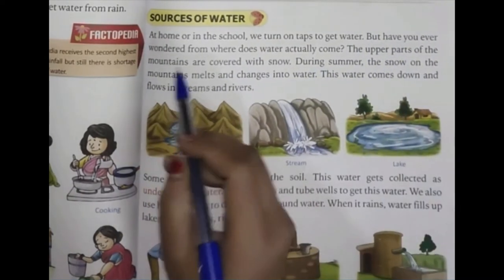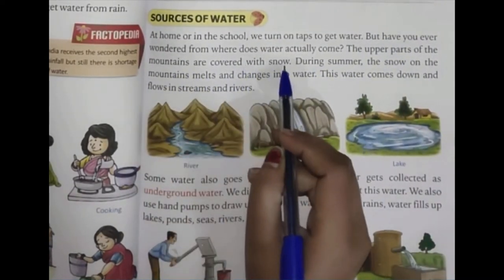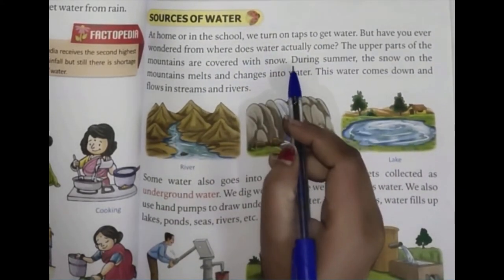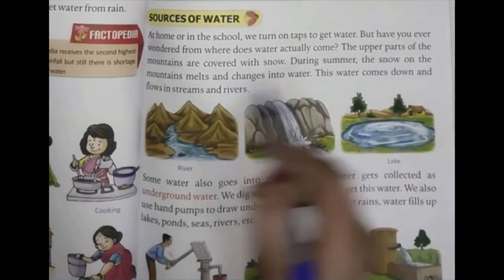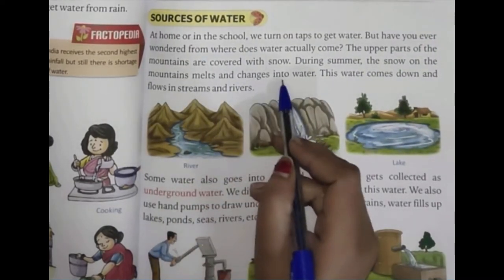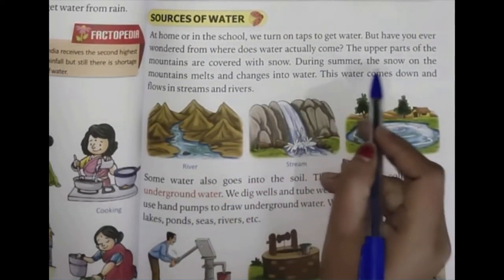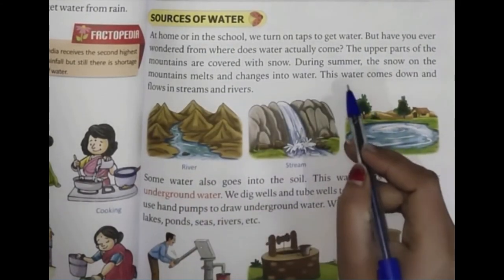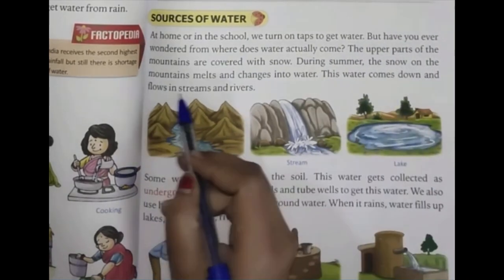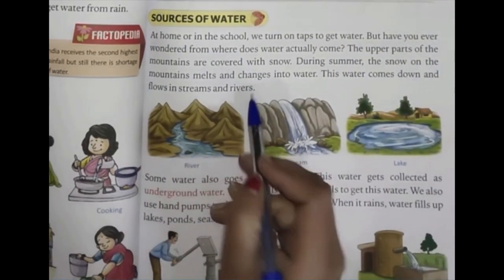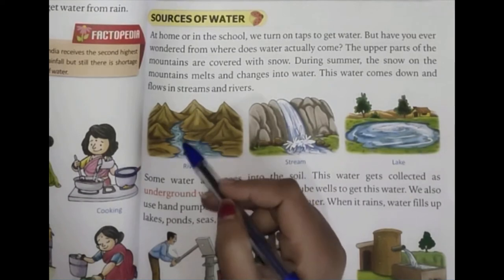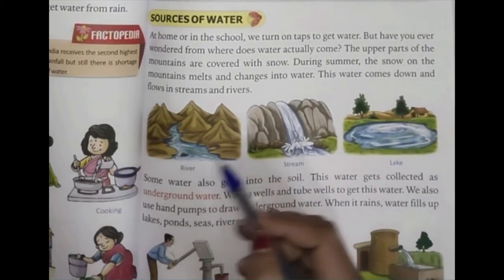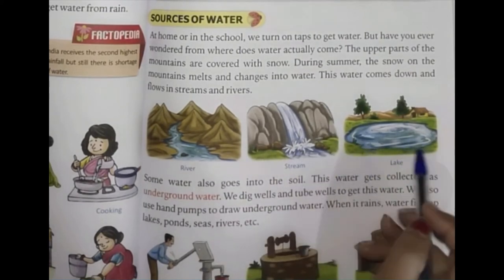The upper parts of the mountains are covered with snow. During summer, the snow on the mountain melts and changes into water. This water comes down and flows in streams and rivers. As you can see here, the water is falling from the mountains.